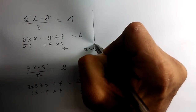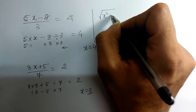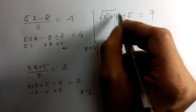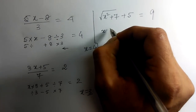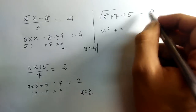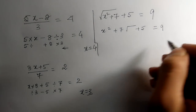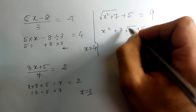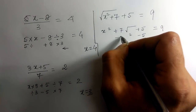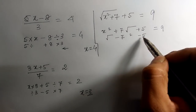Let us take another example: √(x² + 7) + 5 = 9. The operations are: x is squared, then plus 7, then square root, then plus 5. To reverse: minus 5, then square (opposite of root), then minus 7, then take the square root.